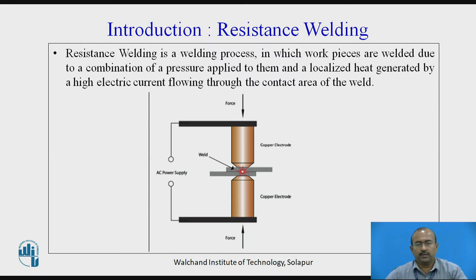Let us see the introduction of resistance welding. Resistance welding is a welding process in which workpieces are welded due to a combination of pressure applied to them and localized heat generated by a high electric current flowing through the contact area of the weld. One type of resistance welding conceptual figure is shown here. The two electrodes as well as the workpiece are part of the electric circuit, normally AC power supply. Pressure is also required to fulfill the particular task.